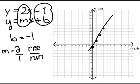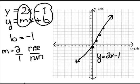And then you draw the line. Hopefully you do a little better than I did. You always want to label it y equals 2x minus 1, just so that your instructor knows what this graph is supposed to be. And that's all there is to graphing using the y-intercept formula.